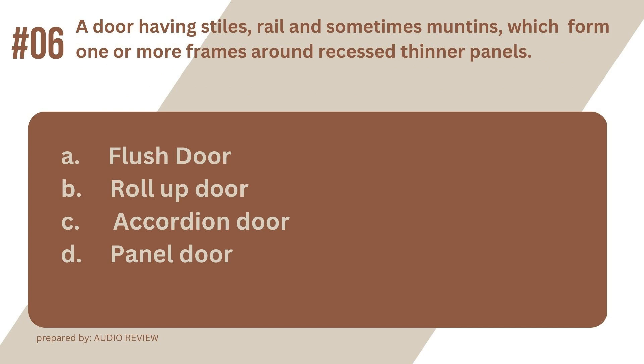Question 6. A door having stiles, rail, and sometimes muntins, which form one or more frames around recessed thinner panels. A. Flush door. B. Roll-up door. C. Accordion door. D. Panel door. The answer? It's D. Panel door. A door having stiles, rail, and sometimes muntins, which form one or more frames around recessed thinner panels. Panel door.